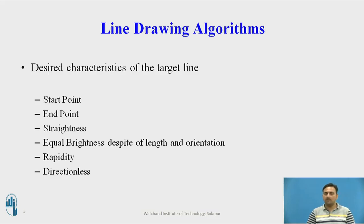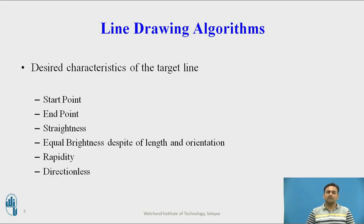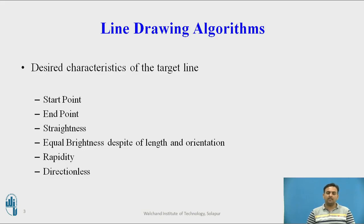We consider the X1 and Y1 coordinate values of the start point, and X2, Y2 indicate the coordinate values of the end point of a desired line. Another necessary characteristic of a desired line is its straightness — the line should go in a proper straight way from the start point to the end point. There should also be equal brightness along the length of that targeted line.